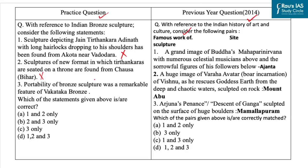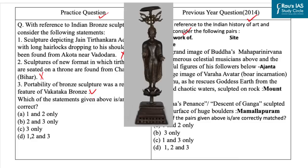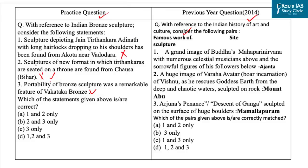The third statement is: portability of bronze culture was a remarkable feature of Vakataka bronze. This statement is correct, because Vakataka bronze images of the Buddha from Maharashtra are contemporary with Gupta period bronzes and show the influence of the Amaravati style of Andhra Pradesh from the 3rd century CE. The additional importance of Gupta and Vakataka bronzes is that they were portable, and monks carried them from place to place for individual worship or to be installed in Buddhist Viharas.